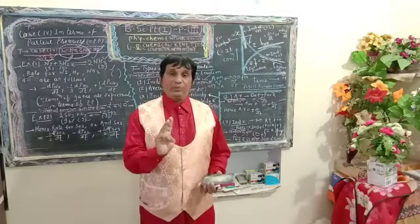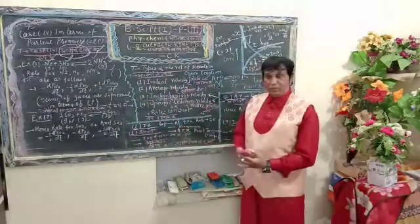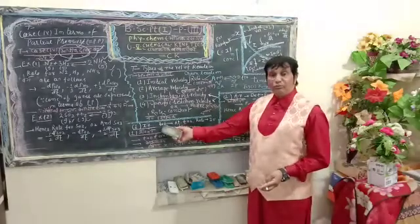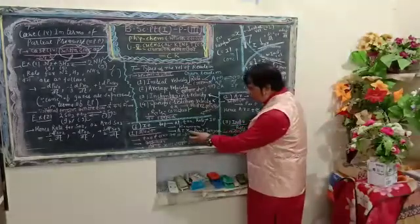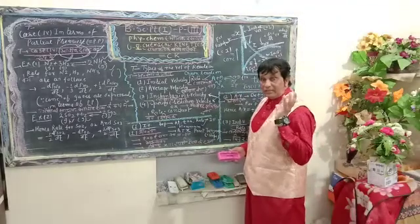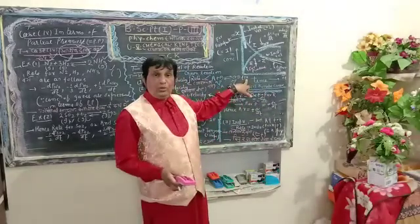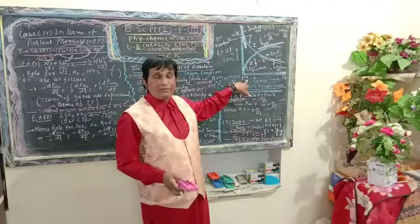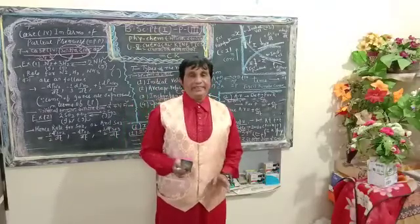To repeat the three important postulates about initial velocity: first, at t = 0, the velocity of the reaction is known as initial velocity; second, it possesses maximum value; and third, its value can be calculated by drawing a tangent at point x and calculating the slope.